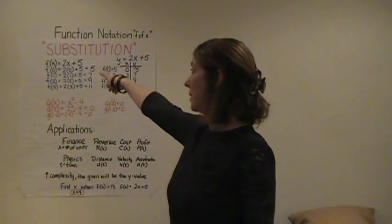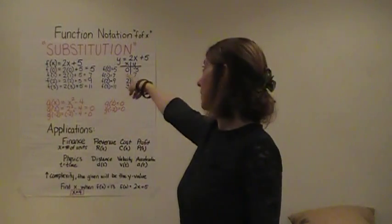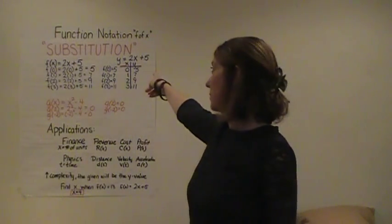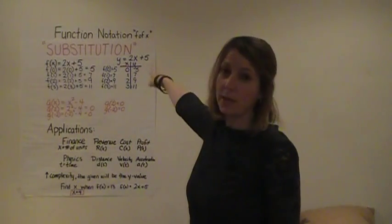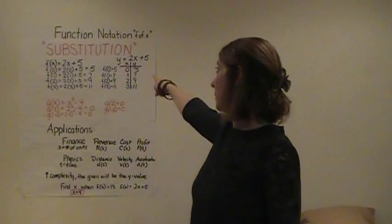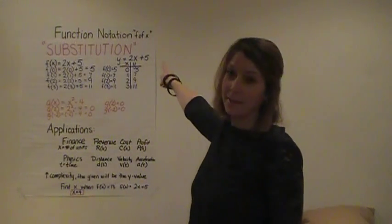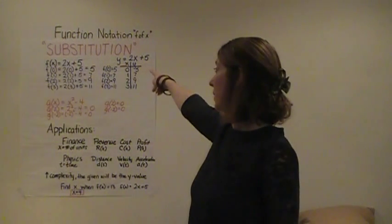So the first thing I have up here is that f(x) equals 2x plus 5, and right next to it, y equals 2x plus 5. If you wrote an xy table, you'd have (0, 5) and (1, 7), and you'd plug in the x value and get the corresponding y value.